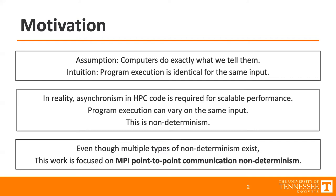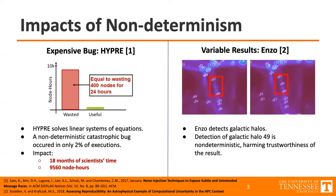Multiple types of non-determinism exist, but we're focused on MPI point-to-point communication non-determinism. To motivate why you should care about non-determinism, I want to show a couple of examples. One, on the left, is an expensive bug. It is in the software Hyper, which solves linear systems of equations.